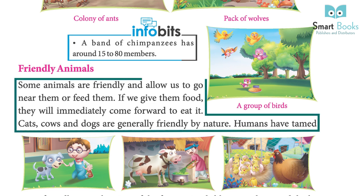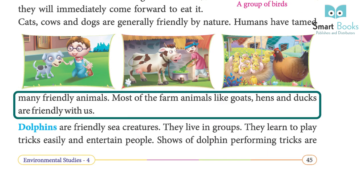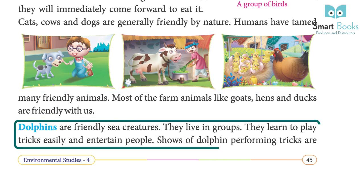Friendly animals: some animals are friendly and allow us to go near them or feed them. If we give them food, they will immediately come forward to eat it. Cats, cows, and dogs are generally friendly by nature. Humans have tamed many friendly animals. Most farm animals like goats, hens, and ducks are friendly with us.